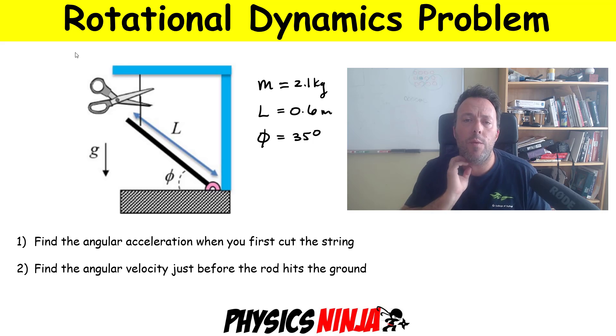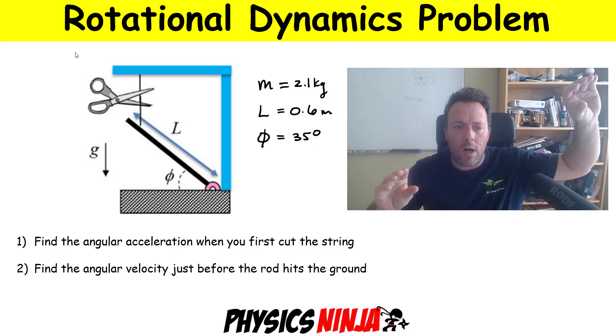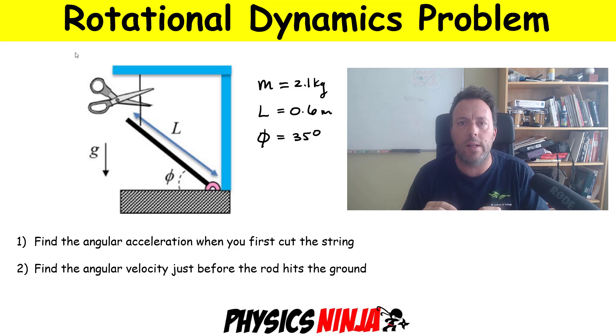Hi everybody, Physics Ninja here. Today we've got a great rotational dynamics problem. I have a rod that has a mass of 2.1 kg, a length of 0.6 meters, and I have it hanging here at an angle of 35 degrees with respect to the ground.